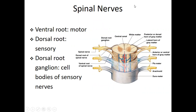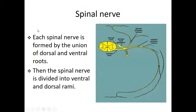The spinal nerve has two roots: the ventral root for the motor, and the dorsal root for the sensory. The dorsal root ganglion is where the cell bodies of the sensory nerve are located. The cell body of the sensory nerve is located at the dorsal root.